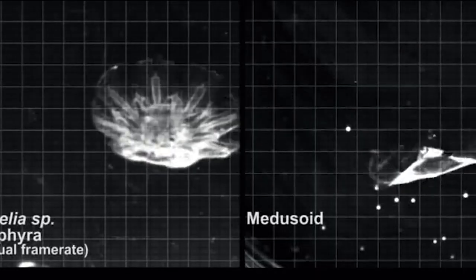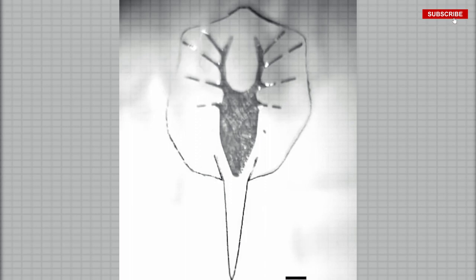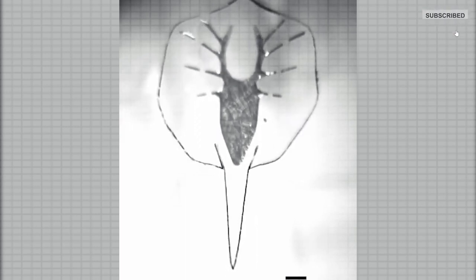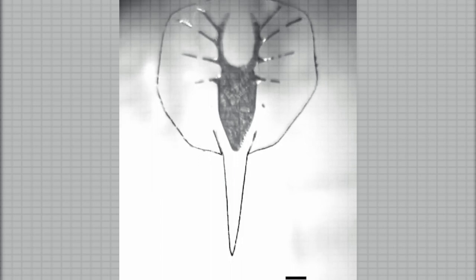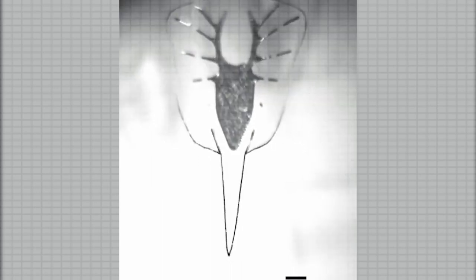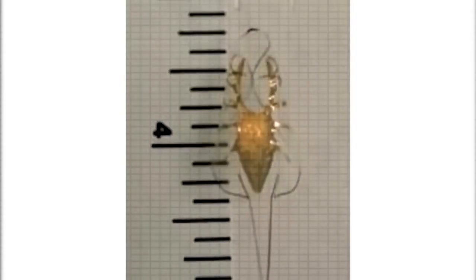Scientists have created a light-controlled stingray. It's a stingray shape made out of an artificial backbone that is layered with rat heart muscles. Instead of being directly activated by electricity, these muscle cells have been programmed to be activated by light. This way, you can drive the robot around by shining lights on either the right or left-hand side.